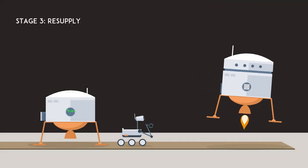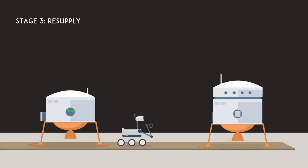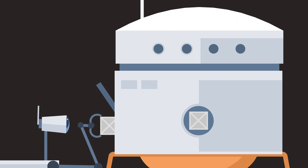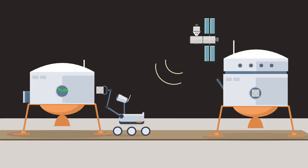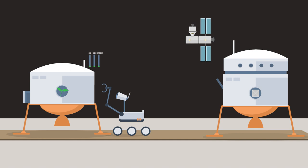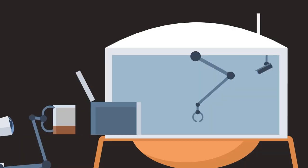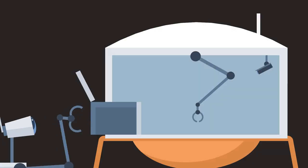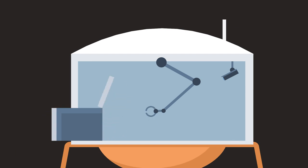The third stage lander will be deployed, containing resupply materials for the growth chamber. Astronauts will operate the rover to take these samples to the growth chamber system and replace the depleted containers. The internal arm of the chamber system will then maneuver the new seeds into position.